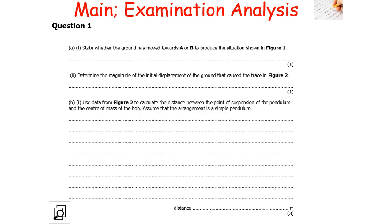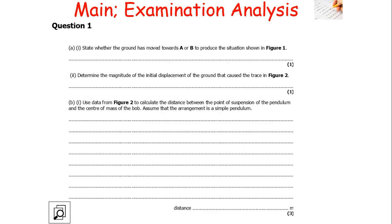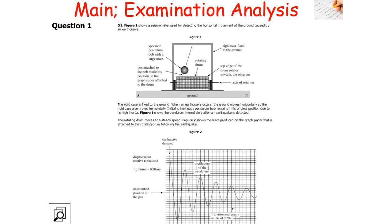The question asks us to state whether the ground moved towards A or B to produce the situation shown in figure 1. The trick with these types of questions is to read the information carefully. It says initially the heavy bob remains in its original position due to its high inertia. So if we look at the diagram and the bob is displaced in a particular direction, the ground has moved towards B, shifting across towards B, making the bob appear further towards A.